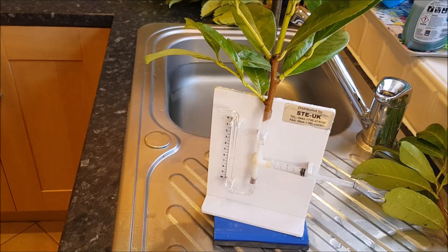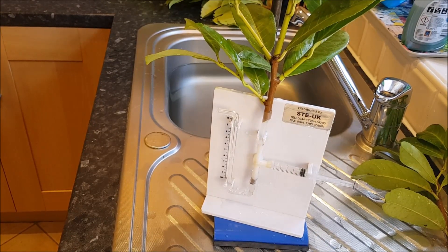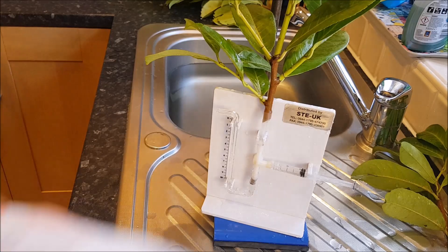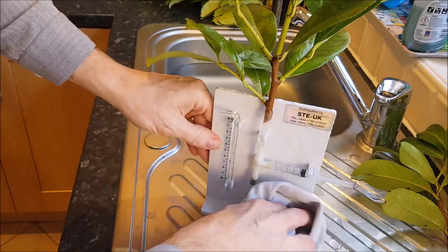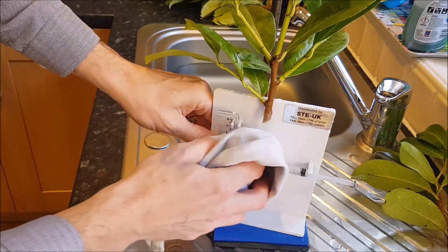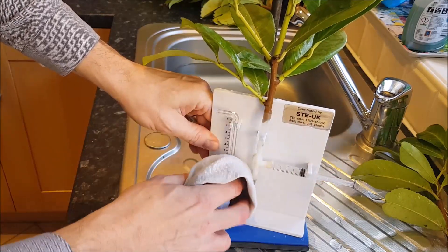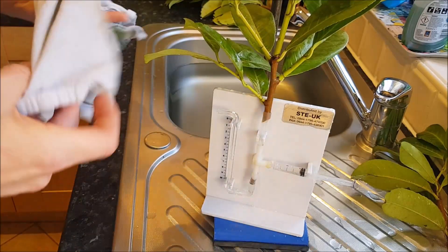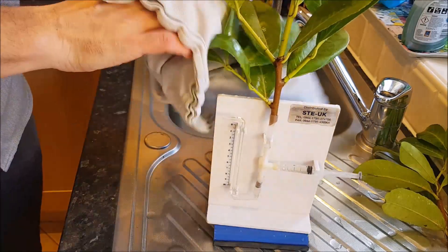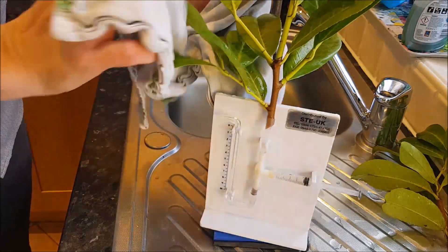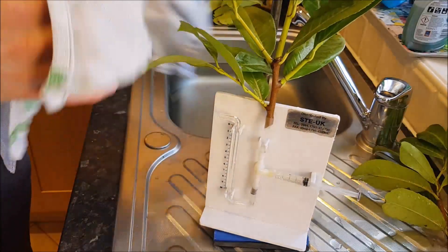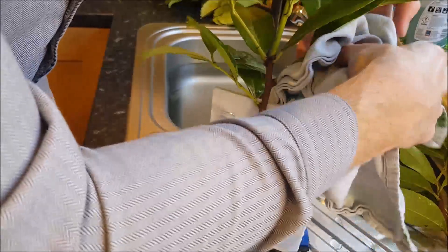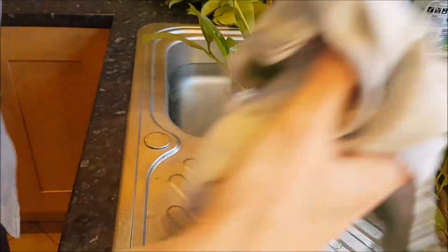So I've taken the plant and the potometer out of the sink now. What I'm going to do is dry everything down with a tea towel. I'm going to check there's no leaks because remember we mustn't let any air get in and also we want to be able to see the water uptake. I'm also going to dry off the leaves just so that transpiration won't take place. If the leaves are wet then obviously less transpiration is going to be able to occur if the stomata are wet and all that kind of stuff.